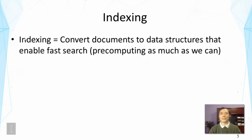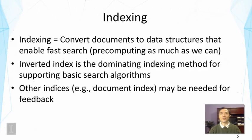Once we do tokenization, we index the text documents, and that is to convert the documents into some data structure that can enable faster search. The basic idea is to pre-compute as much as we can. The most commonly used index is called inverted index, and this has been used in many search engines to support basic search algorithms. Sometimes other indices, for example a document index, might be needed in order to support feedback. These techniques are not really standard in that they vary a lot according to the feedback methods.